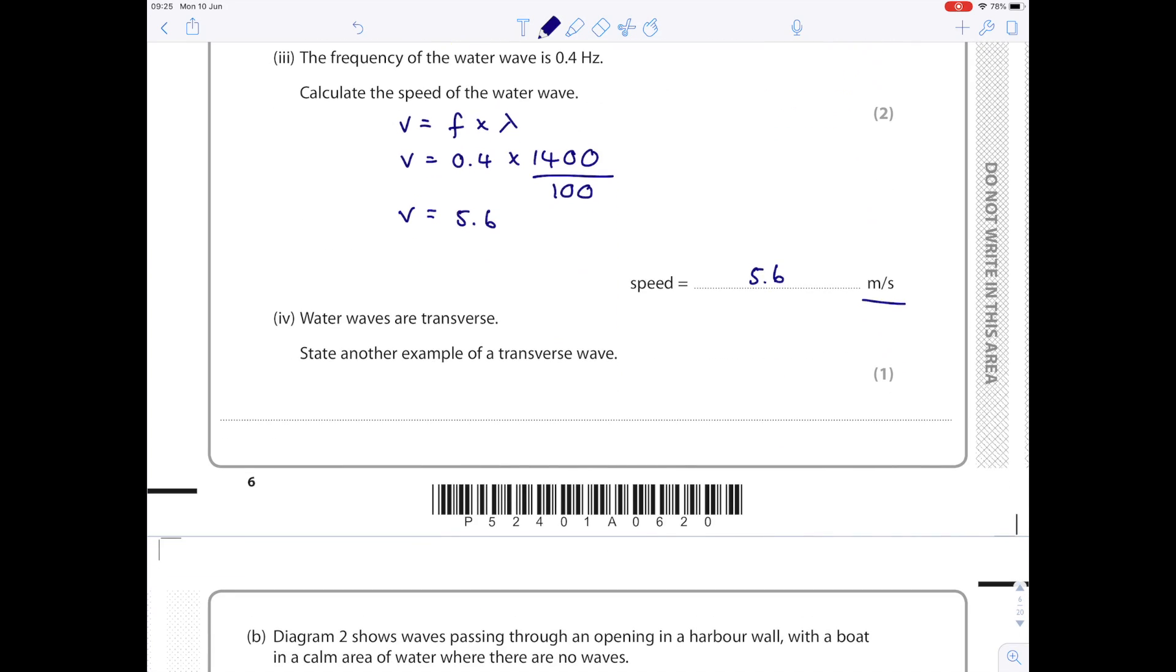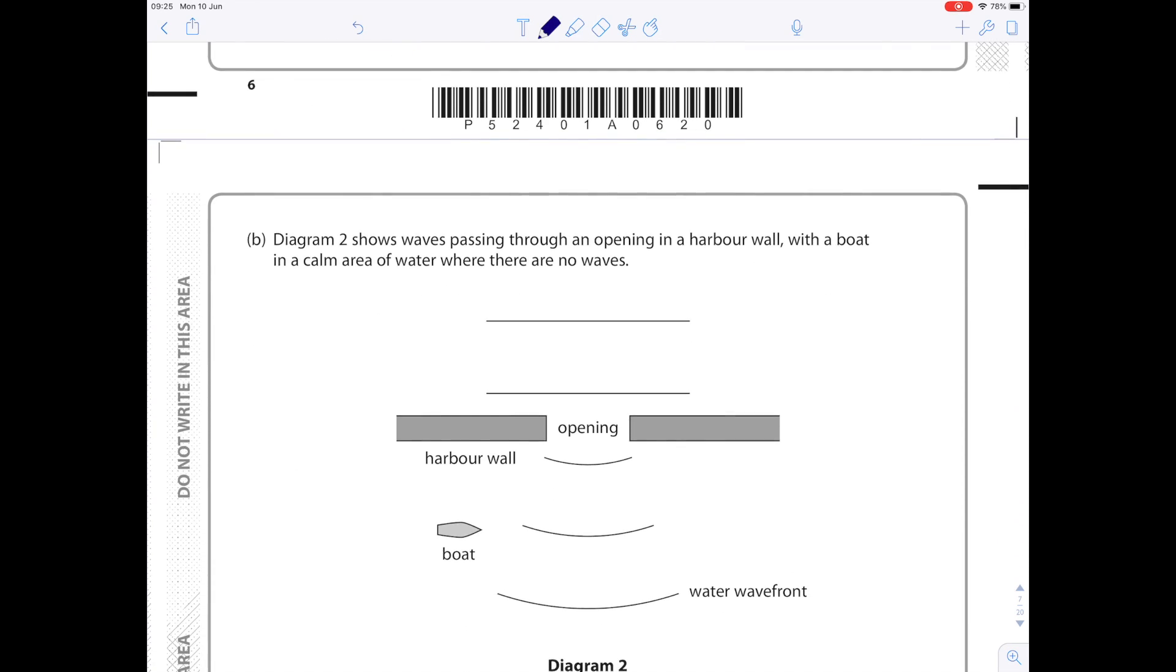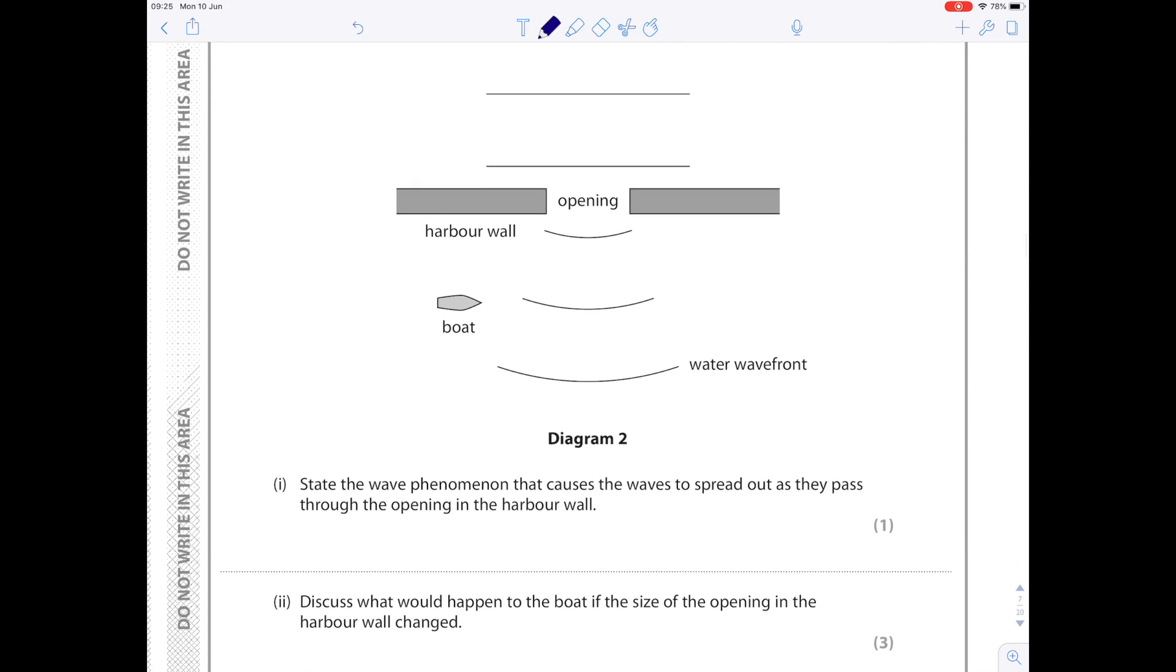Water waves are transverse waves. State another example of a transverse wave. Any electromagnetic wave, so light is the one I'm going to state, but you could have stated any of them. Diagram two shows waves passing through an opening in a harbor wall with a boat in a calm area of water where there are no waves. State the wave phenomenon that causes the waves to spread out as they pass through the opening in the harbor wall. That is diffraction.